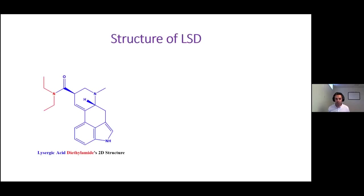First off, the structure of LSD. You can think about LSD as being two separate parts of a molecule. In blue is called lysergic acid, which is why LSD is sometimes referred to on the street as acid. Then in red, there is this part of the molecule called the diethylamide part of the molecule. We'll talk about these as arms later in the discussion.